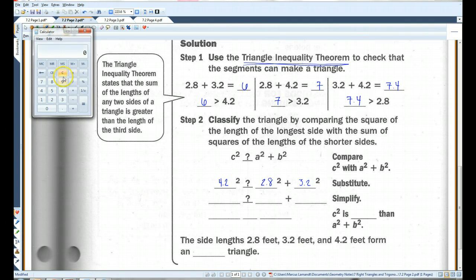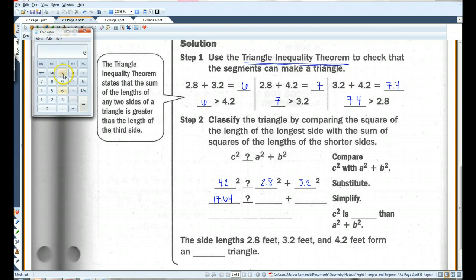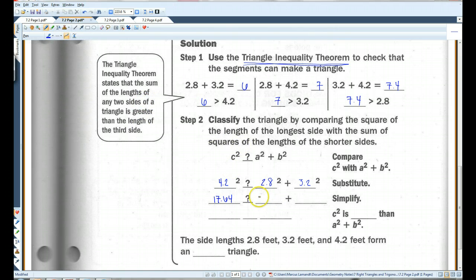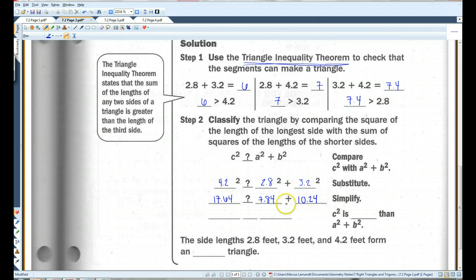Let's see here. 4.2 times 4.2. We've got 17.64. Okay. 2.8. 2.8 times 2.8. 7.84. And 3.2. 3.2 times 3.2. 10.24. So, if I add these two together,